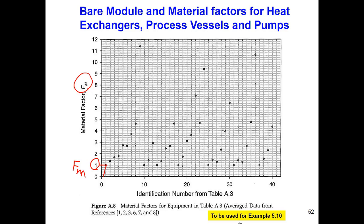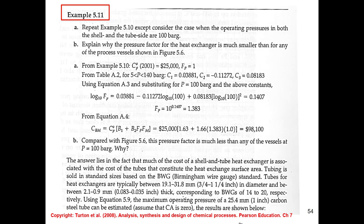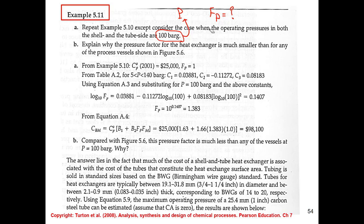The next example is the same as the previous one, but instead of 1 bar we now have 100 bar operating pressure in both the shell and tube sides. The material of construction is the same, so the material factor is the same. The method is exactly the same, but now I have a new pressure, so I need to find the new pressure factor.